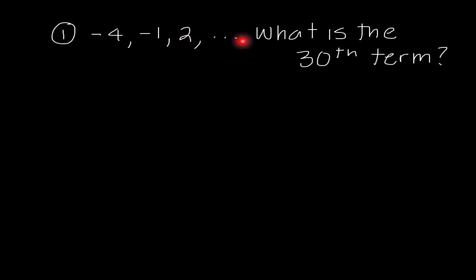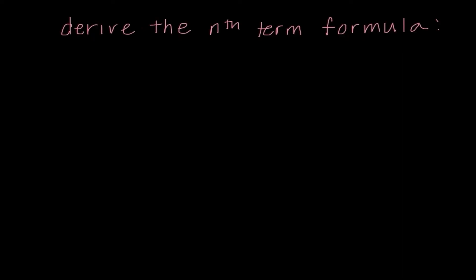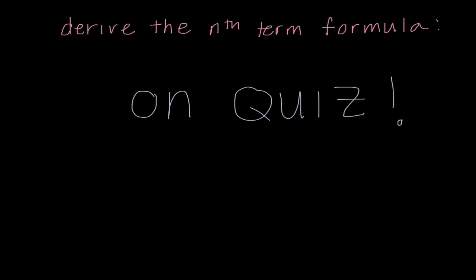Our problems today are going to look like this: negative 4, negative 1, 2, ... what is the 30th term? We can see we're adding 3 each time. Some of you might want to just keep adding 3 in your calculator 30 times, but obviously there must be an easier way. And there is — we are going to derive the nth term formula. This is definitely going to be on a quiz, so make sure you are paying attention to how to derive and come up with this formula.